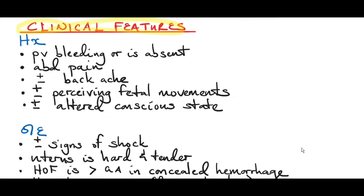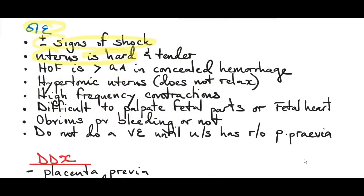Clinical features of abrupta placenta: remember it can be concealed or revealed. A patient may present with or without pervaginal bleeding, abdominal pain, plus or minus backache, plus or minus reduced fetal movements, and plus or minus altered conscious state — they might be unconscious if in shock. On examination the patient might be in shock, the uterus is hard and tender, and the fundal height is larger than gestational age in a concealed abruption. There is a hypertonic uterus that does not relax, high-frequency contractions, and it can be difficult to palpate fetal parts or the fetal heart rate due to the woody-hard uterus. There may or may not be obvious pervaginal bleeding depending on whether it is concealed or revealed.